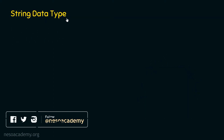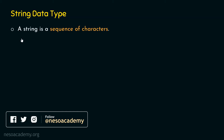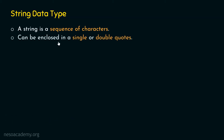What is a string data type, or what is a string in Python? A string is simply a sequence of characters in Python. A string can be enclosed in single or double quotes. It is allowed in Python to use single or double quotes to enclose, or wrap, a string.